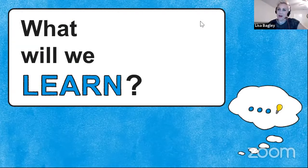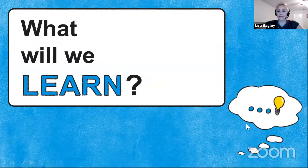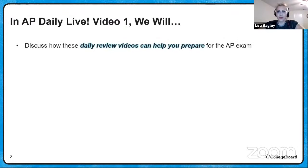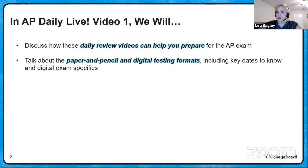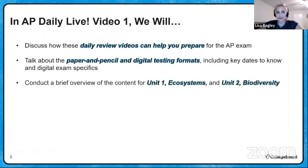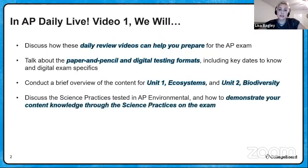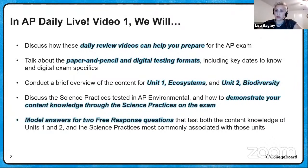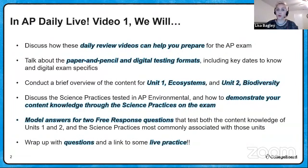In this video, AP Daily Live Video 1, we're going to discuss how these daily review videos can help you prepare for the AP Environmental Science exam. We'll talk about the paper and pencil and the digital testing formats, including key dates and digital exam specifics. We'll conduct a brief overview of the content for Unit 1, ecosystems, and Unit 2, biodiversity. We'll discuss the science practices tested in AP Environmental Science and model answers for two free response questions. Finally, we'll wrap up with some questions and a link to some live practice.